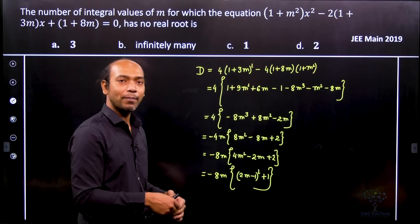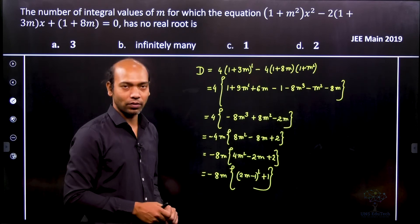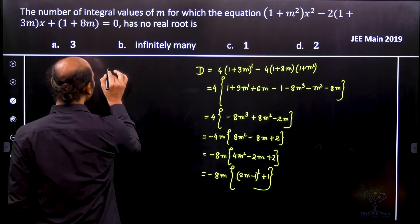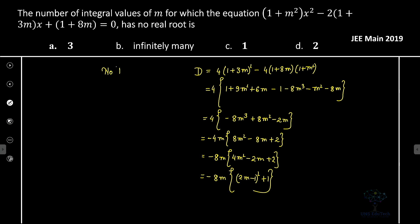So therefore it is never possible that it is equal to 0. Now they say that no real roots. So no real roots, or complex roots, it is obviously D < 0. That implies that -8m[(2m - 1)² + 1] is actually less than 0.